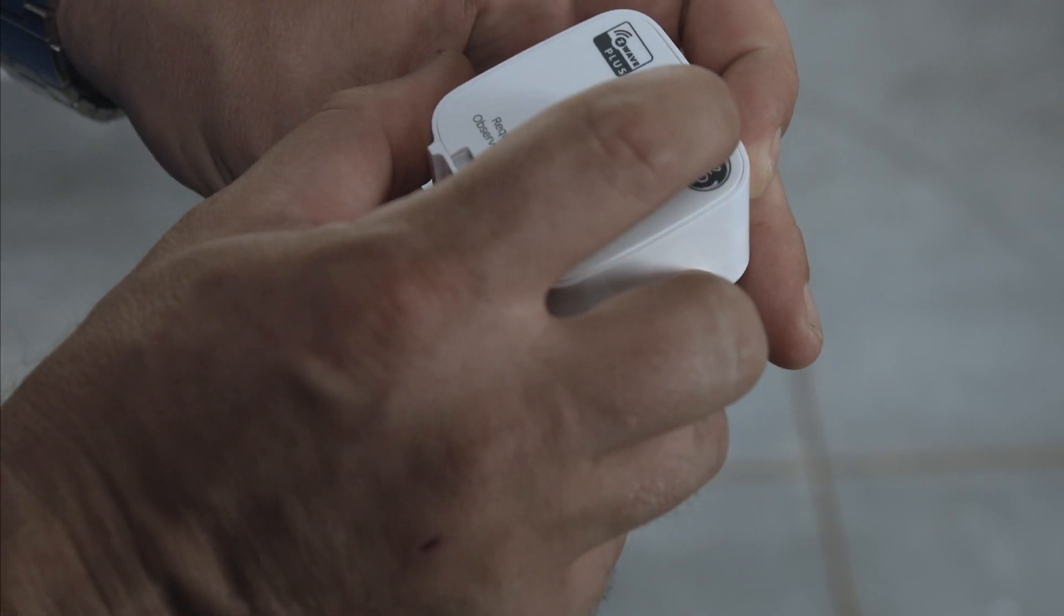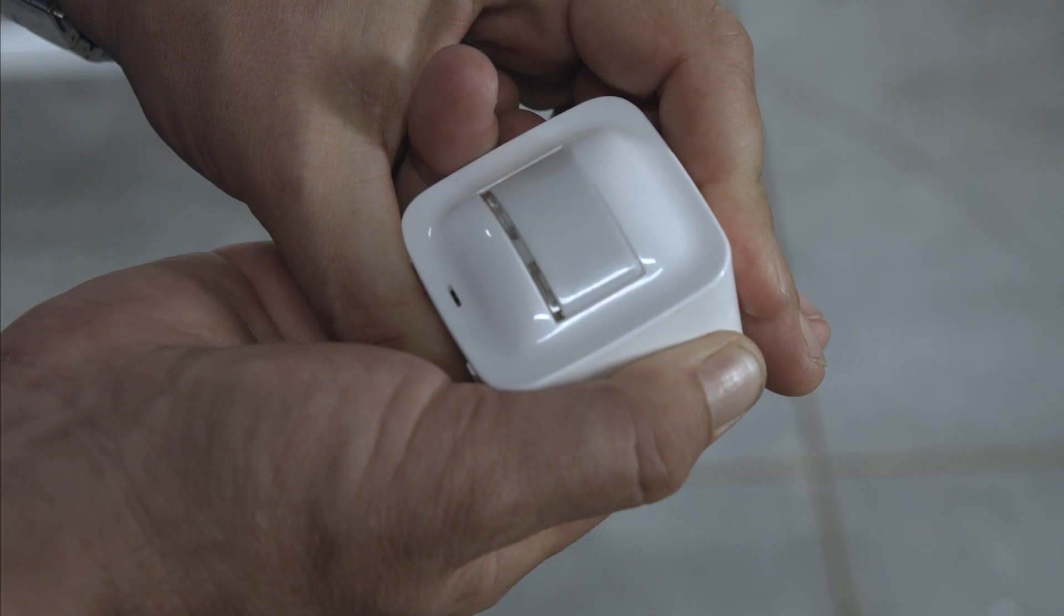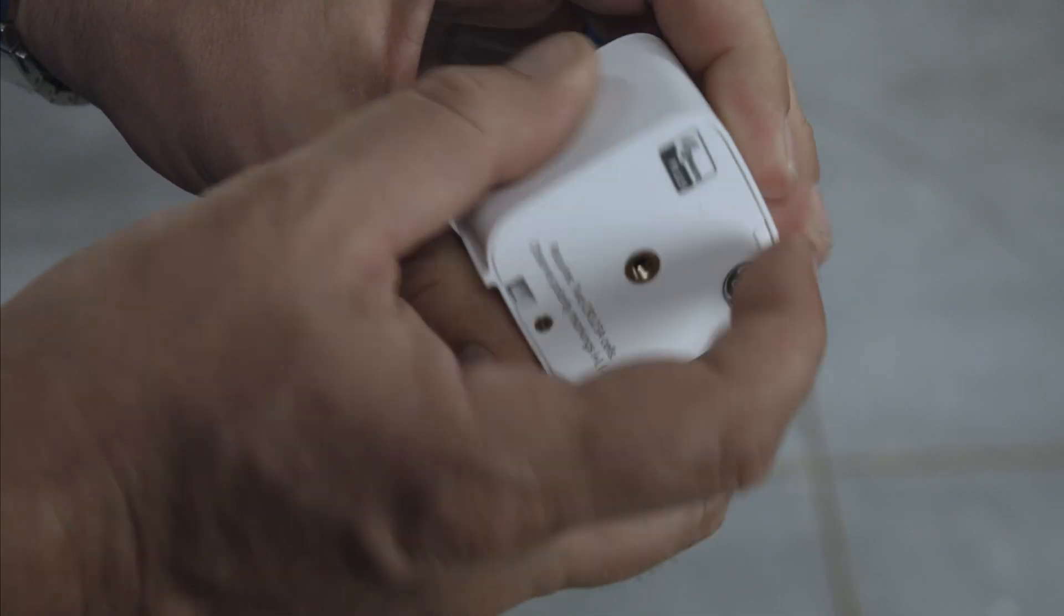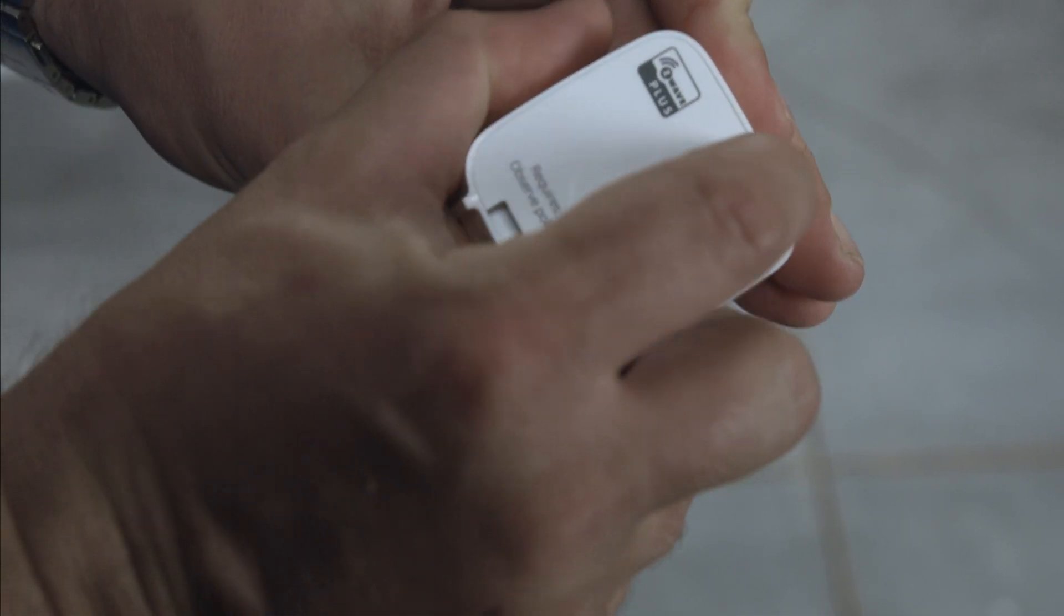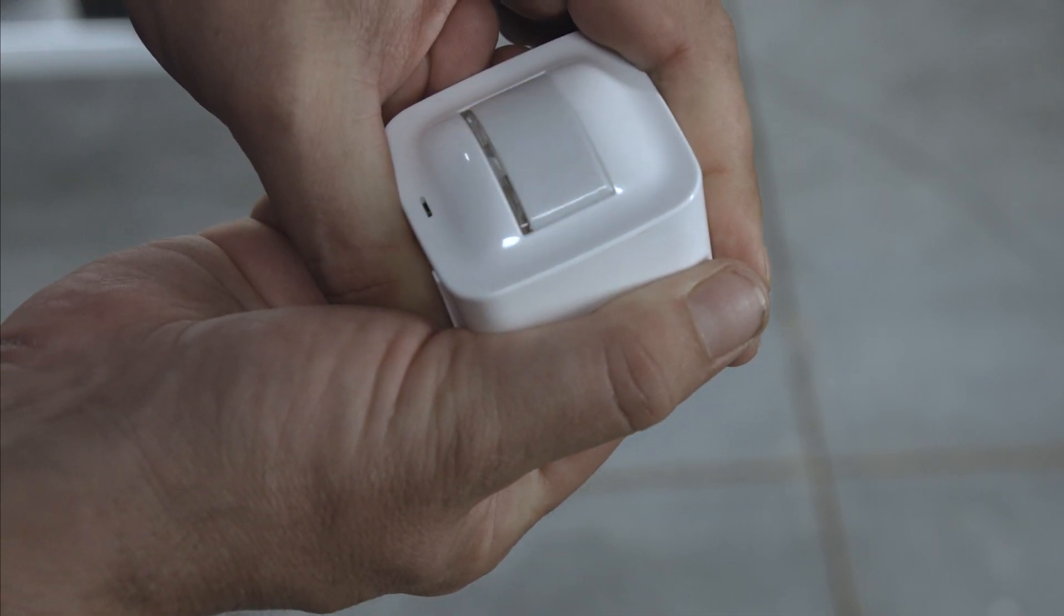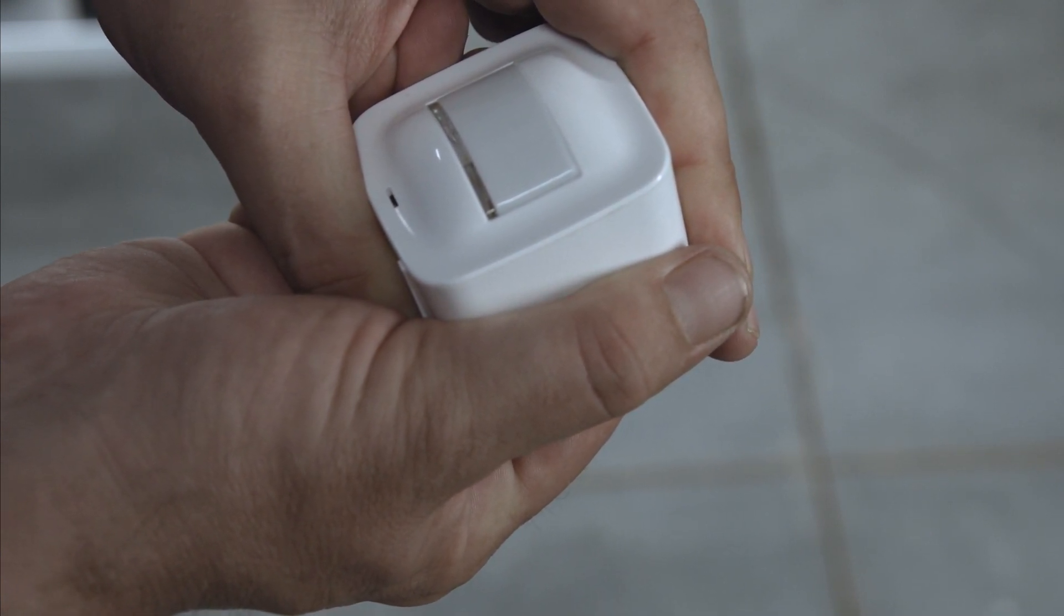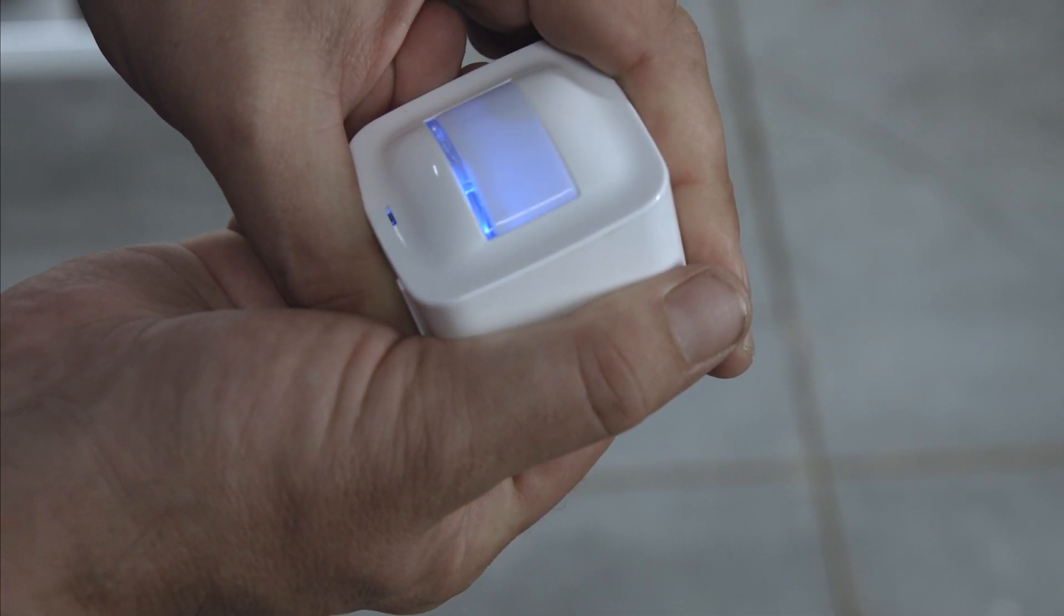To select the low setting, press and hold the programming button on the back of the sensor for three seconds until the LED on the front of the sensor flashes once. Press and hold the button for three seconds again until the LED flashes twice to select the medium setting. To return to high, press and hold the button for three seconds once more until you see three flashes.